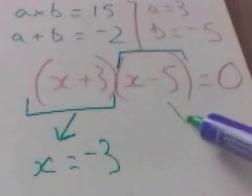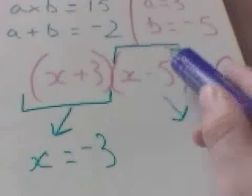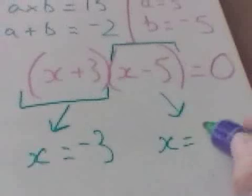The alternative is for x take 5 to be worth nothing. So, what must x be worth for this bracket to be worth nothing? x must be worth 5.